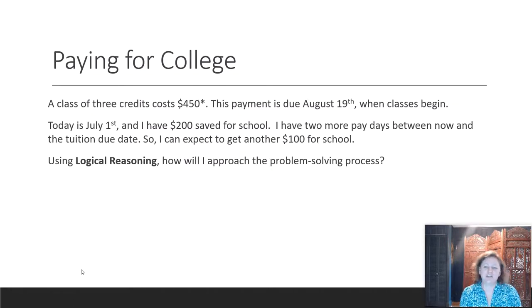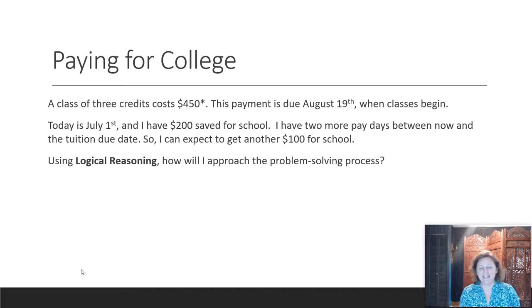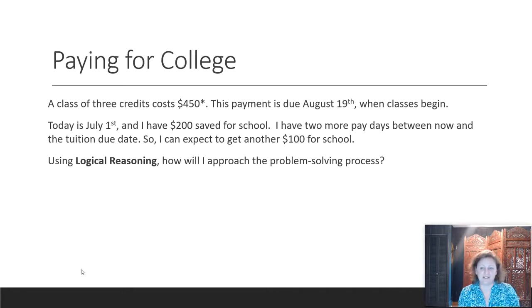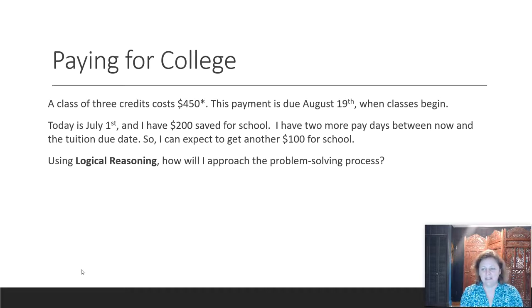First, let's take a look at this problem: paying for college. There's a class of three credits, which costs about $450 at TCC — that's not necessarily the exact amount, but I'm using round numbers. The payment is due on August 19th, which is when classes begin. If it's July 1st and I've got $200, and between now and the due date I'll get another $100, what can I expect from a problem-solving process?